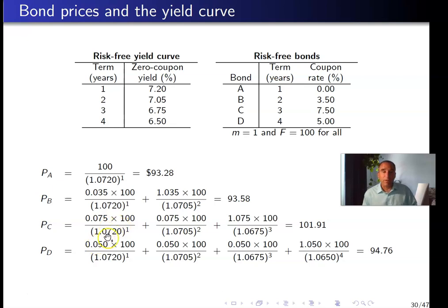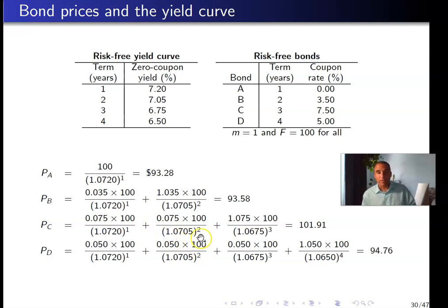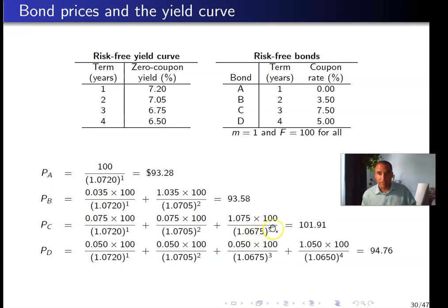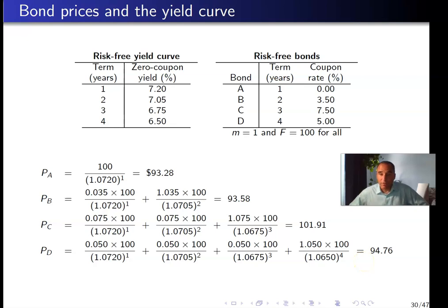For Bond C, one coupon payment received in one year is discounted at 7.2%, one coupon payment received in two years is discounted at 7.05%, and the face value plus coupon received in three years is discounted at 6.75% over three years, giving a price of $101.91. The same procedure for Bond D gives a price of $94.76.